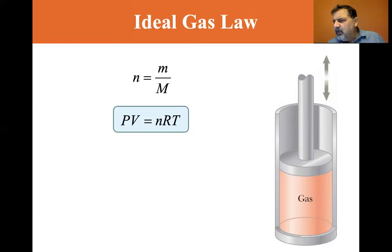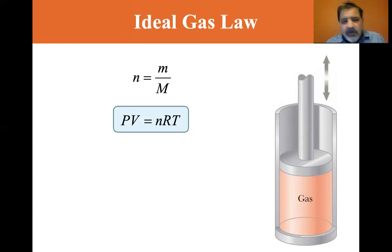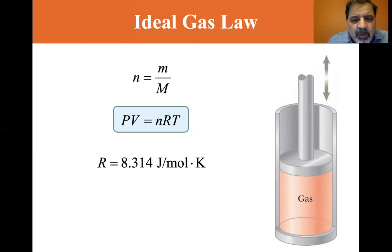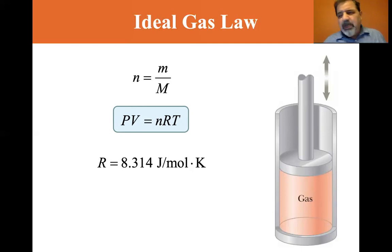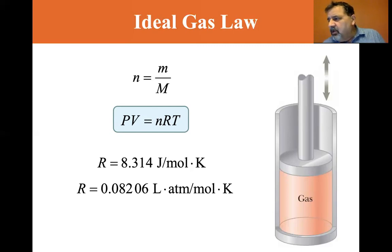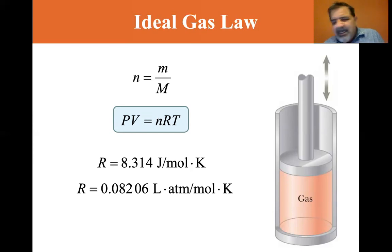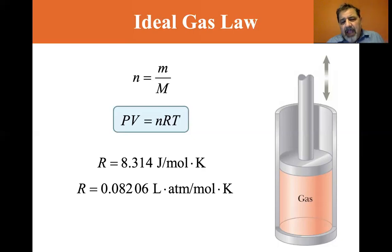These observations are summarized by the equation of state for an ideal gas: PV equals NRT. R is the universal gas constant, equal to 8.314 joules per mole Kelvin, when pressure is expressed in Pascals and volume in cubic meters. If we express pressure in atmospheres and volume in liters — where one liter equals 10 to the negative 3 cubic meters — then R has a value of 0.08206 liters atmospheres per mole Kelvin.